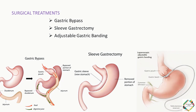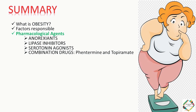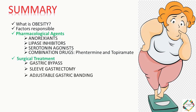So now we have completed both the pharmacological and surgical treatment associated with obesity. To summarize, we have learned about obesity, factors responsible for its development, pharmacological agents such as anorexiants, lipase inhibitors, and serotonin agonists, combination drugs such as Phentermine and Topiramate, and surgical treatments including gastric bypass, sleeve gastrectomy, and adjustable gastric banding. Thank you.